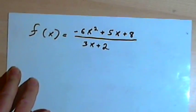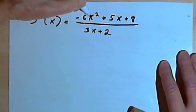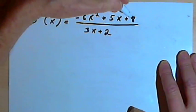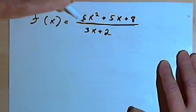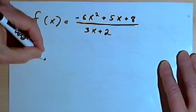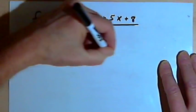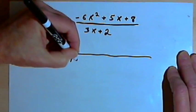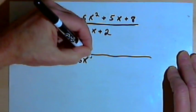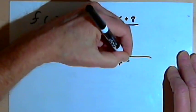Let's do one with long division. This is f of x equals negative 6x squared plus 5x plus 8 divided by 3x plus 2. This would be easier to do with long division since we have that 3x in the denominator. So let's set this up: 3x plus 2 divided into negative 6x squared plus 5x plus 8.